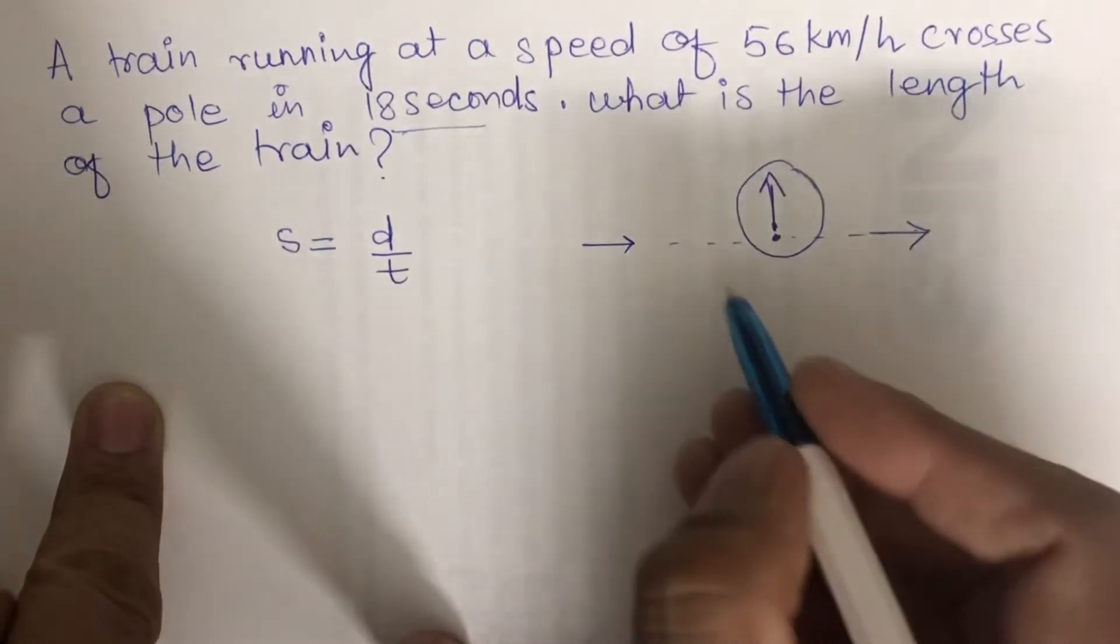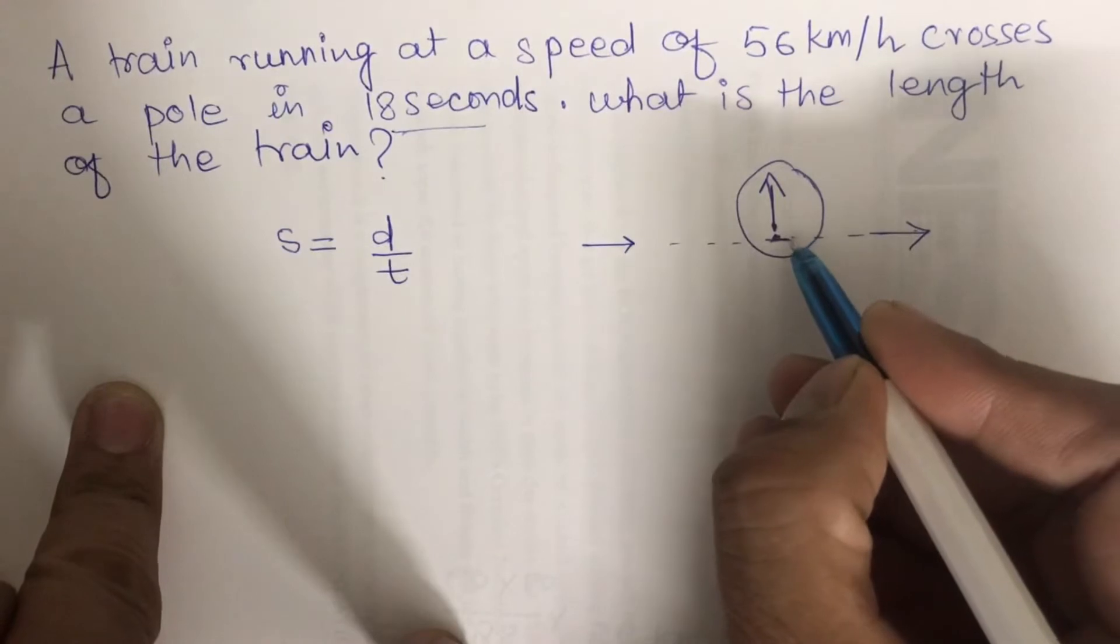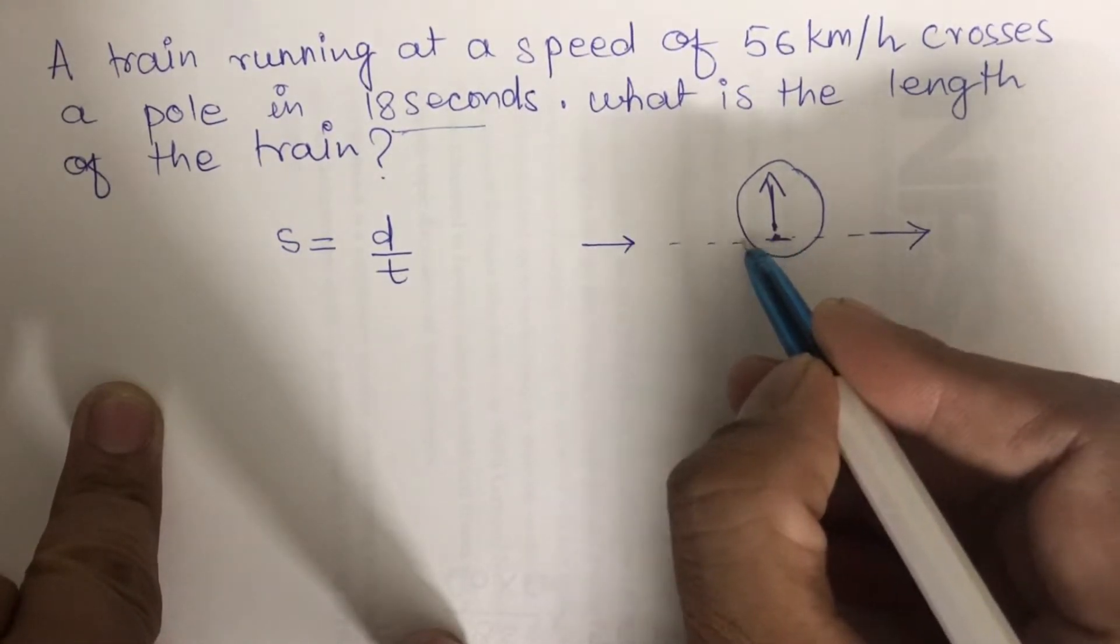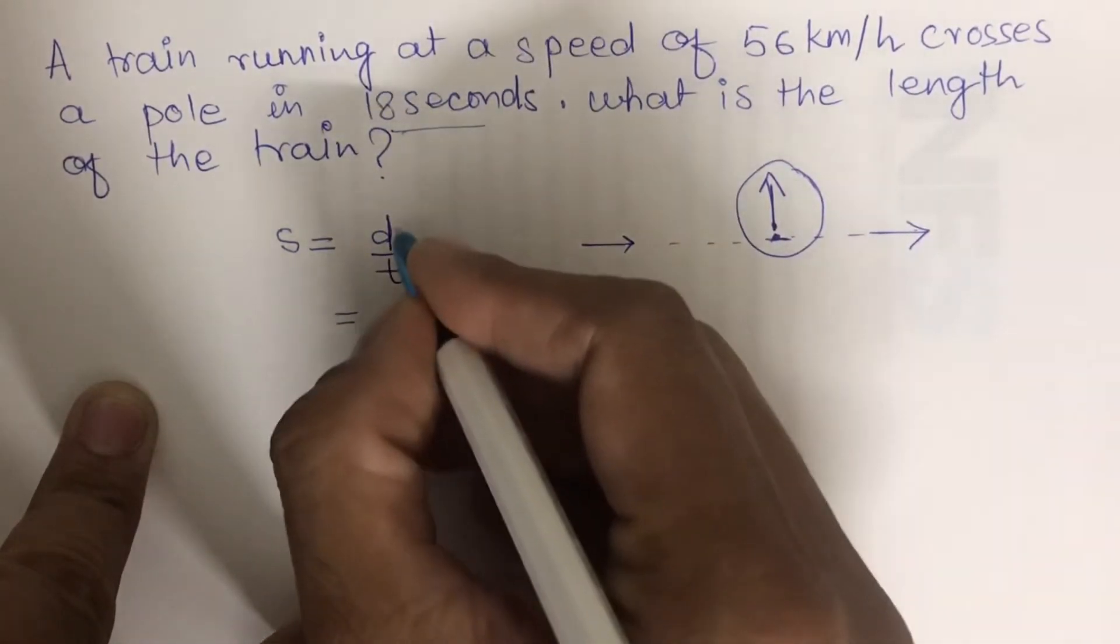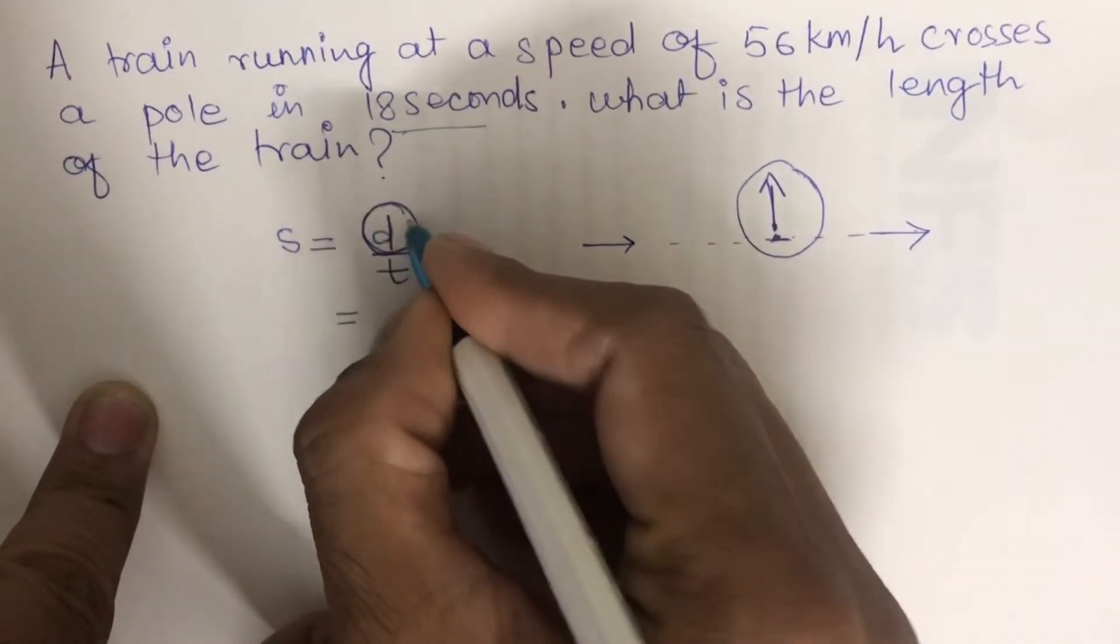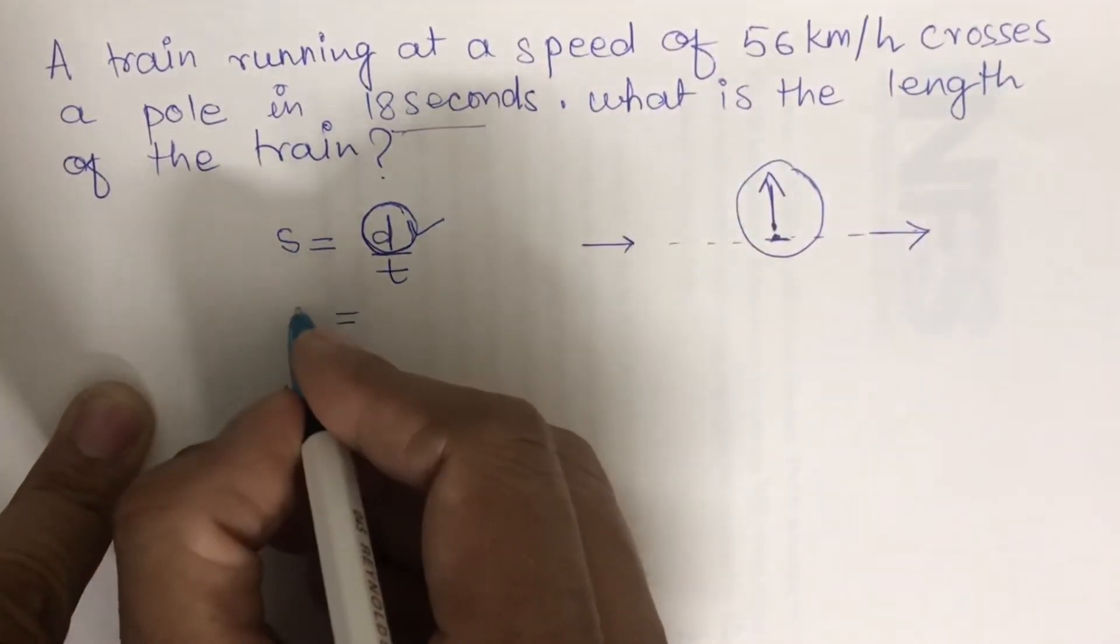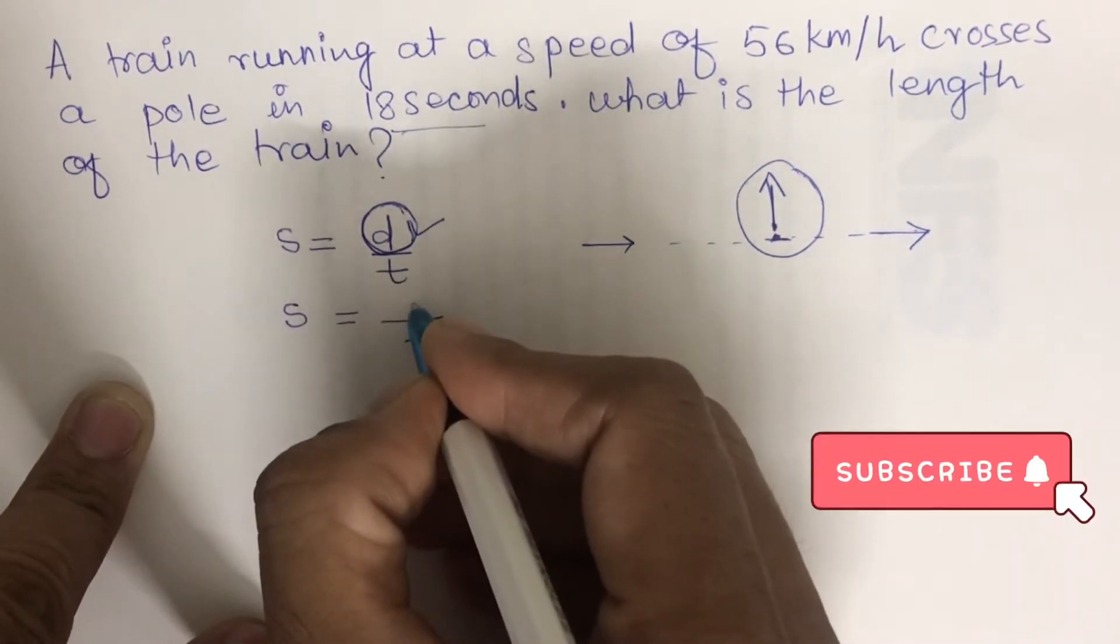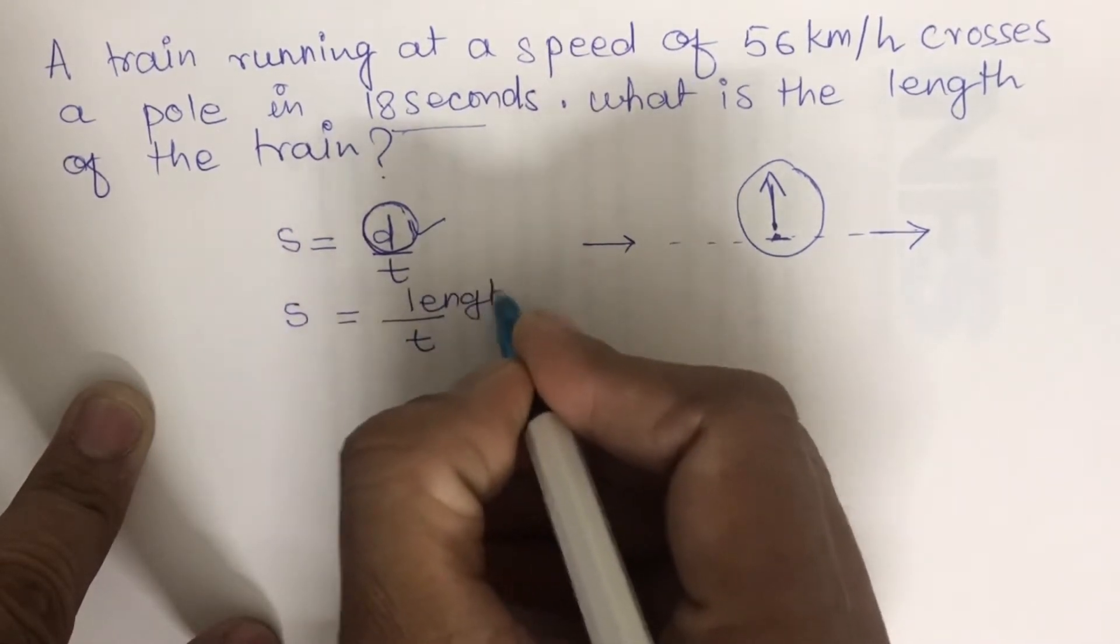Since the train is crossing this pole in a particular time, the length of the train will be the distance traveled. This length is unknown to us and we have to calculate it. We have been given speed and time, but distance is unknown. So this distance is the length of the train.